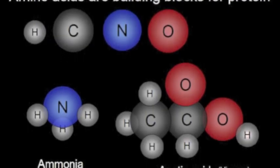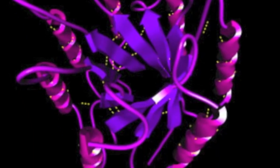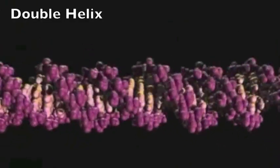We simply follow the instructions, add the ingredients, process, and presto, a protein. The twisted ladder shape of DNA is called a double helix.